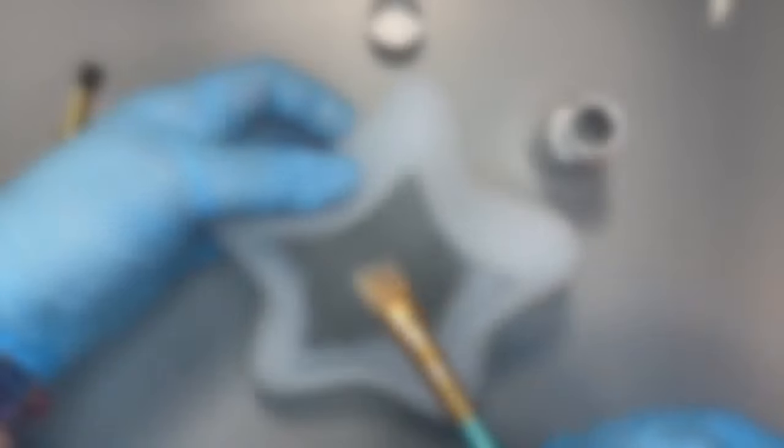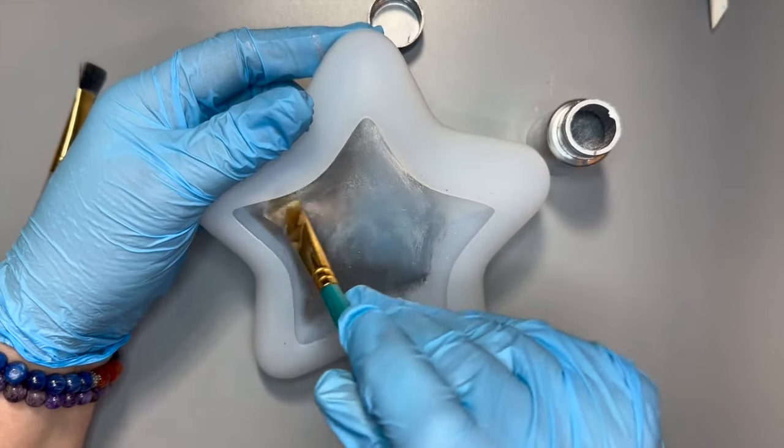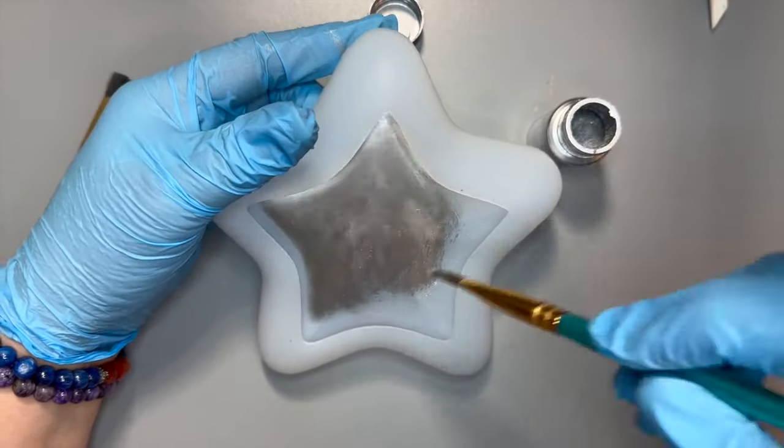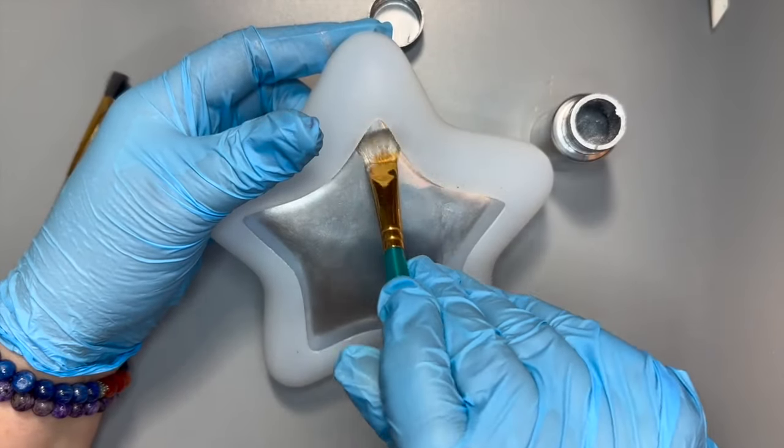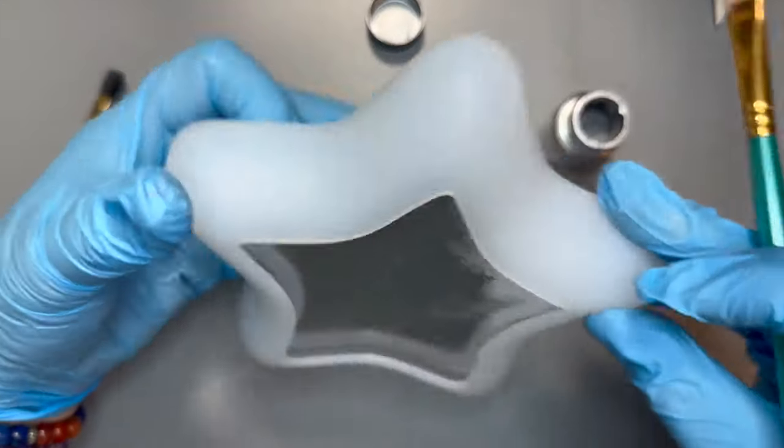They originally said you had to use black on the back of this, but I found that you don't. Usually when you have mica powders, you do have to have black on the back in order to see the colors you're putting in. This silver and these metallic powders from Let's Resin, you don't have to do that.